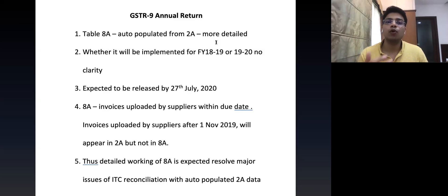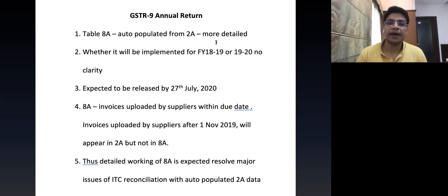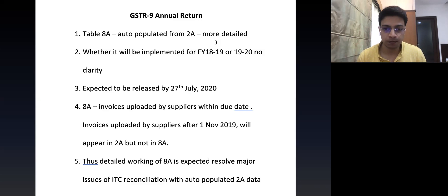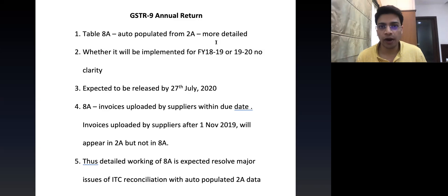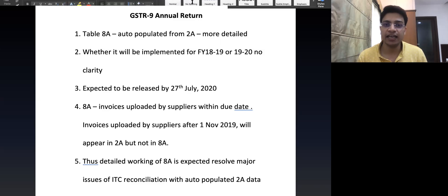Data uploaded by your suppliers after 31st October 2019 will get auto-populated in 2A but won't reflect in Table 8A of GSTR-9 for FY 2018-19. This is one of the major reasons for the mismatch between GSTR-2A data and Table 8A data. However, if this detailed working of Table 8A is provided, it is expected that the major issues of ITC reconciliation for Table 8 will be resolved, and we hope that it is implemented for FY 2018-19 itself.